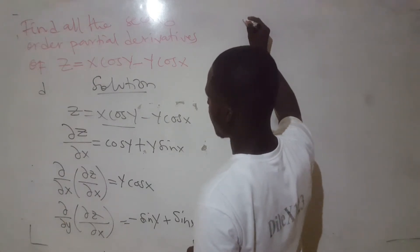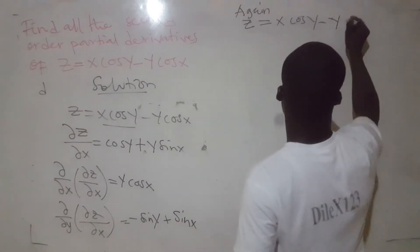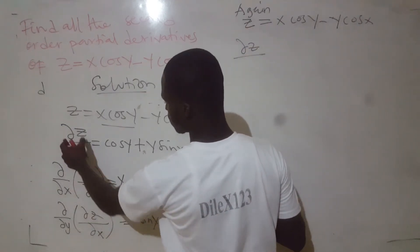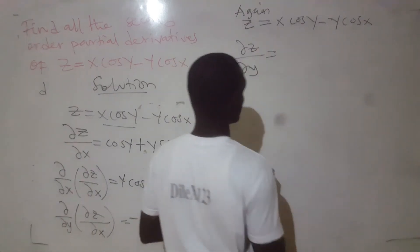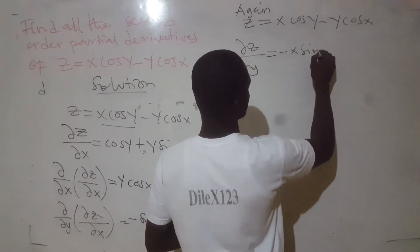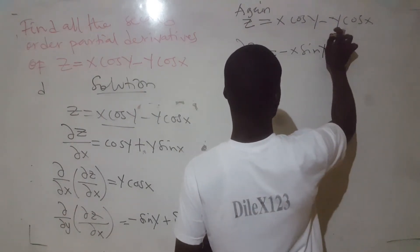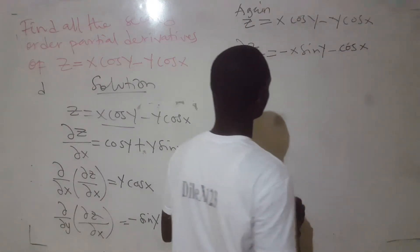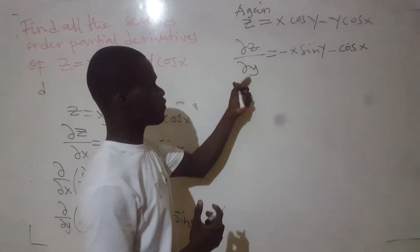Now let's differentiate z with respect to y. If z is equal to x cos y minus y cos x, when we differentiate z with respect to y, x will be a constant. So when we differentiate cos y, we get negative x sin y. Minus — we are differentiating with respect to y, so we won't differentiate cos x. We differentiate y, getting 1. So that will be 1 times cos x, which is cos x. This is the first-order partial derivative with respect to y.